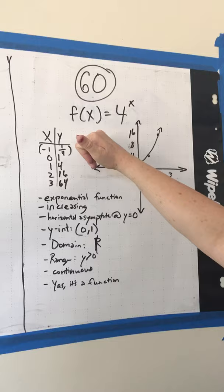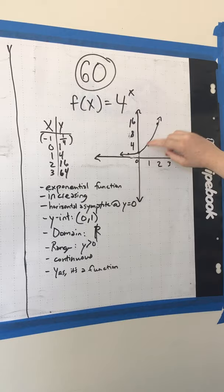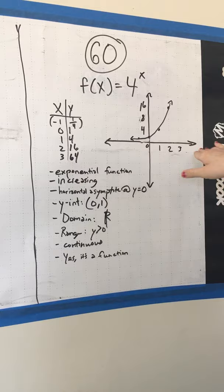So there's also the y-intercept at (0,1), and there's no x-intercepts because it never crosses the x-axis, because of that asymptote.